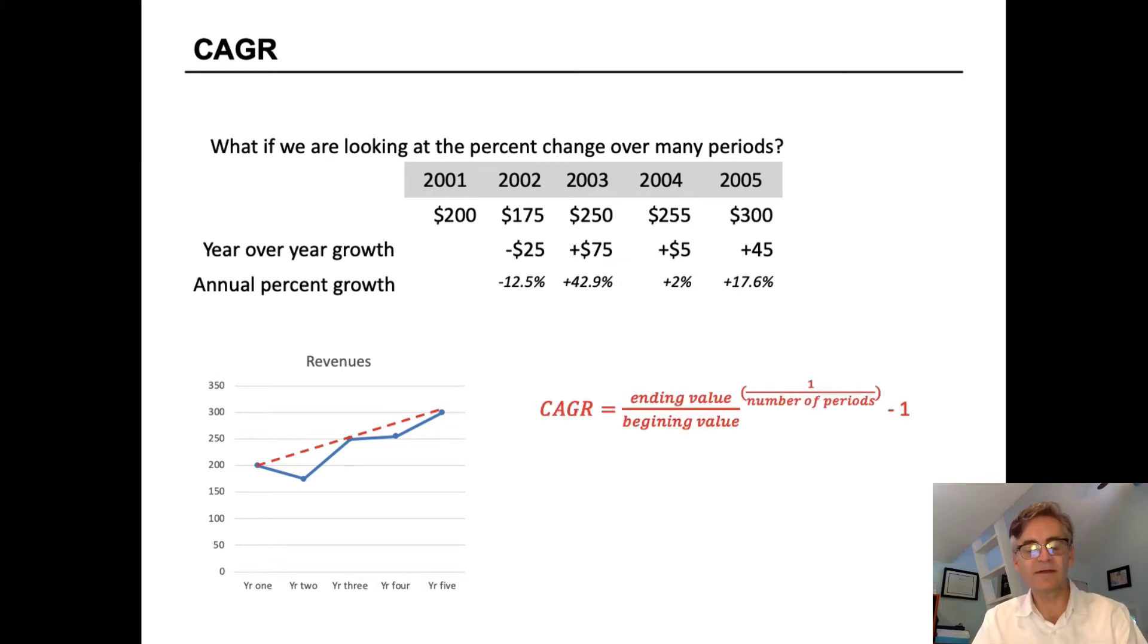So we look at a formula for CAGR, which is the ending value divided by the beginning value, all raised to the exponent of 1 over the number of periods minus 1.